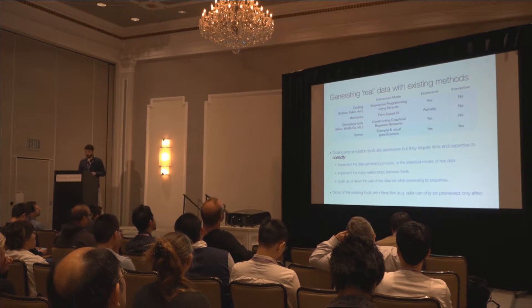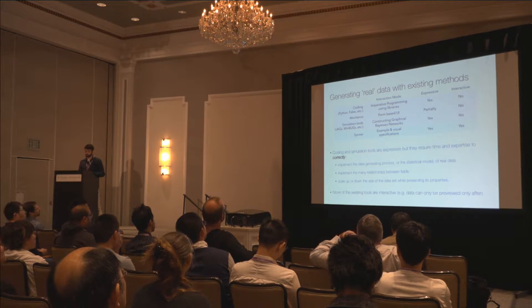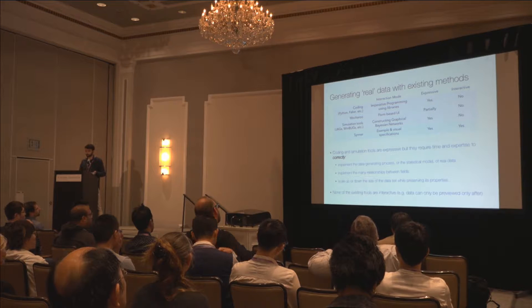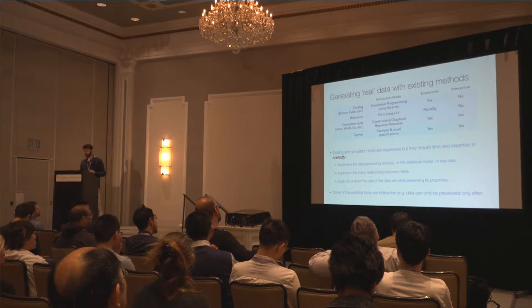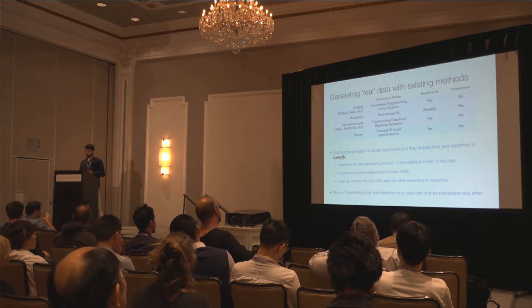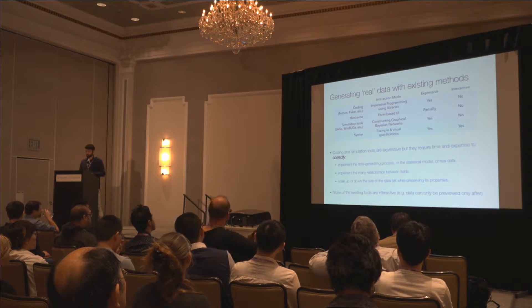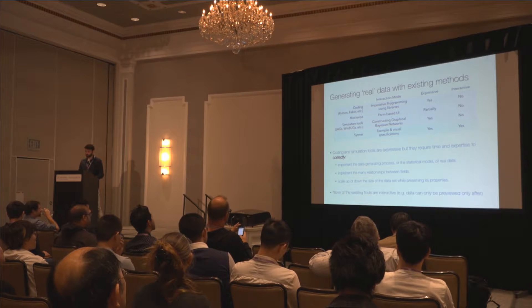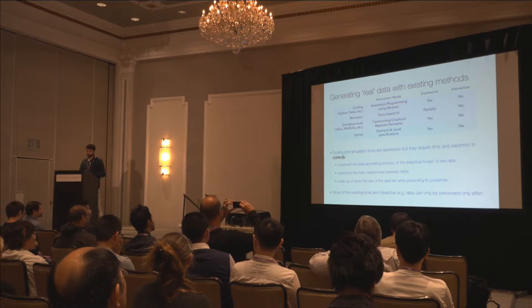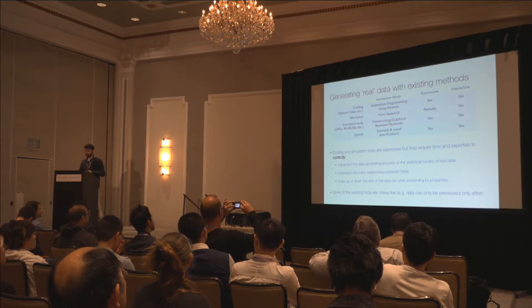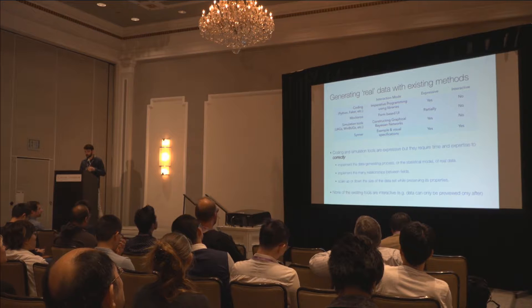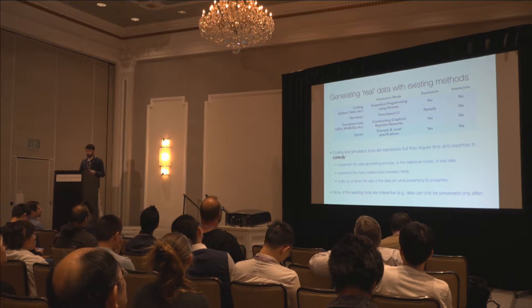But the problem is, however, that realistic data generation is a technically complex task with limited tools. Users can manually code the task, but that takes time and expertise, especially if there are many statistical processes and relationships that describe the data. They can use tools like Mockaroo, but they're very simplistic as well. Or they can use simulation tools, but they need to understand how to describe data, for example, using Bayesian networks, which is not trivial. And finally, most of these tools do not follow how users generate data, which is through an iterative and interactive process where they can incrementally specify and instantly see their data being generated.